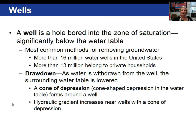If you live in a rural area without access to municipal water, you may be required to drill a well. A well is a hole bored into the zone of saturation well below the water table, because you do not want your well to go dry in a drought. If pumping is significant, you can actually lower the water table — this is called drawdown — and a cone of depression will form immediately around your well.